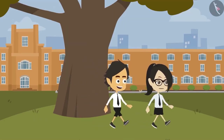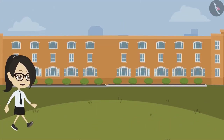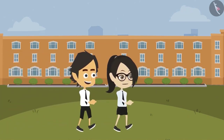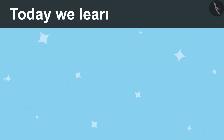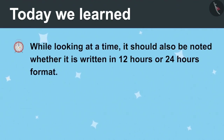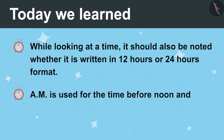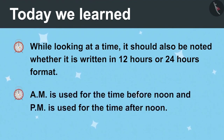From this incident it is understood that while looking at time, the format in which it is written should be kept in mind. While looking at the time, it should also be noted whether it is written in 12-hour or 24-hour format. AM is used for the time before noon, and PM is used for the time after noon.